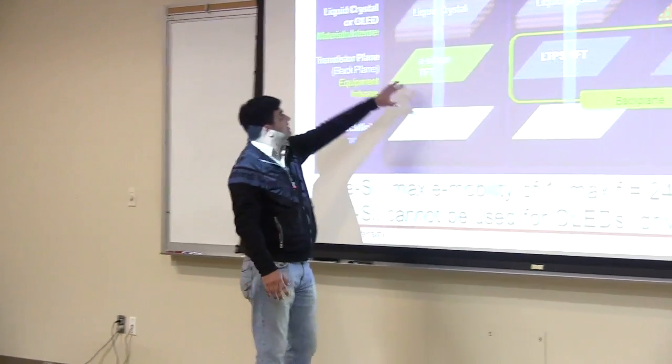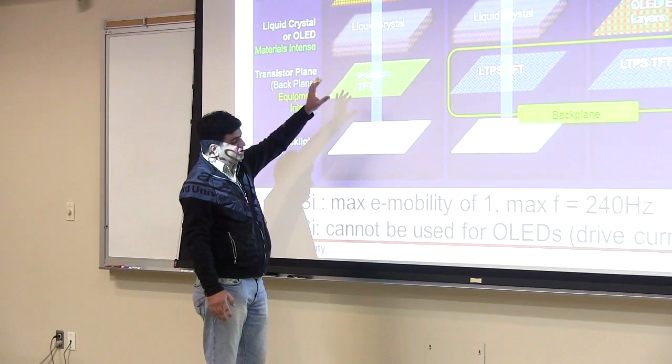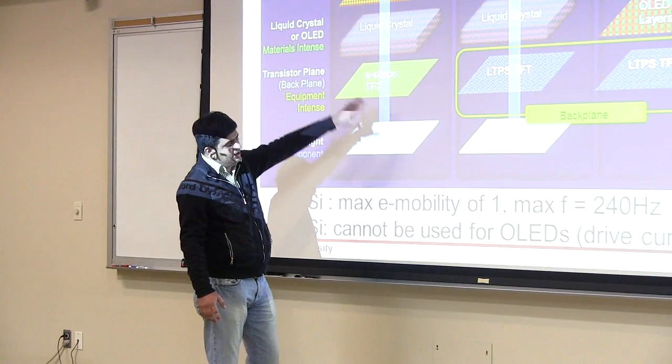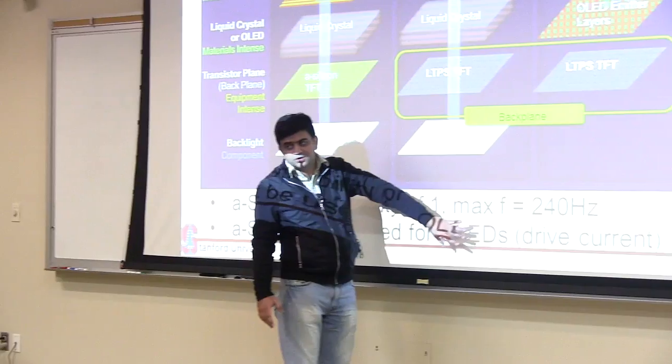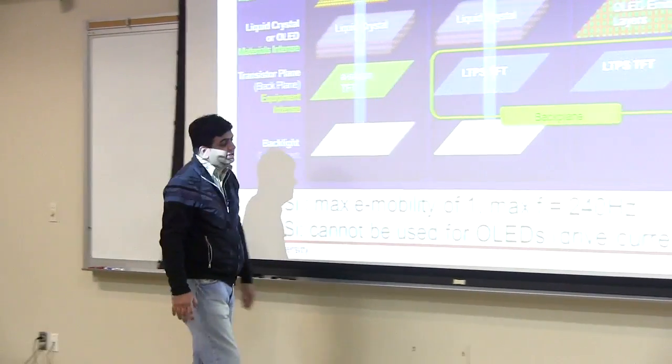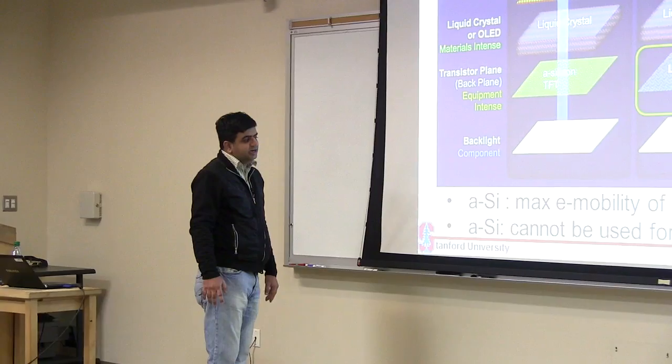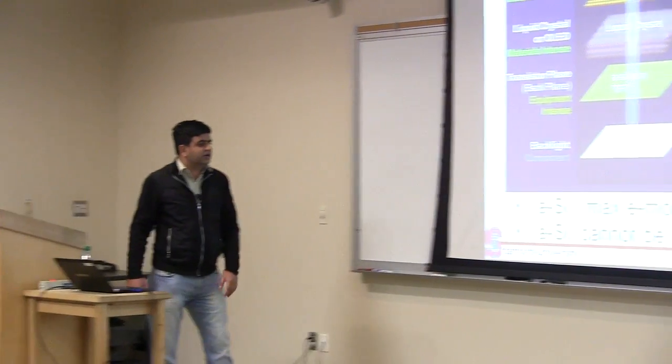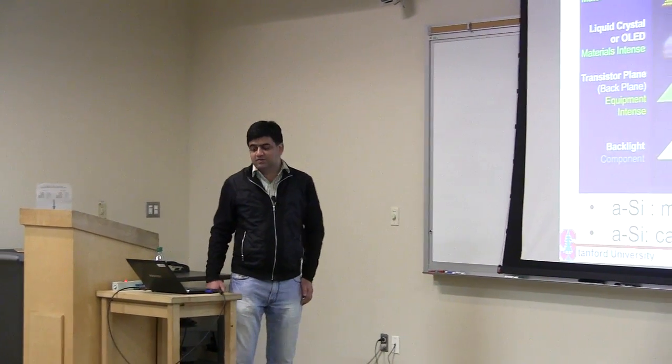Also, this amorphous silicon does not—remember I told you liquid crystals, they don't need any current. They just need a voltage. So this amorphous silicon is okay for applying voltage. But these OLED displays, these are essentially light emitting diodes. It's a diode and you need to drive it with current. And if you need to drive OLED with current, you need a high current. And this amorphous silicon transistor just cannot supply that amount of current which is needed to drive OLED.